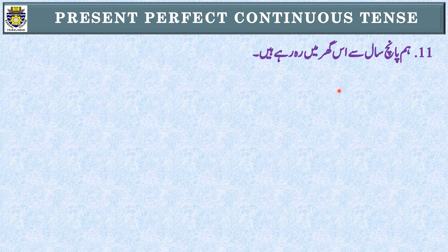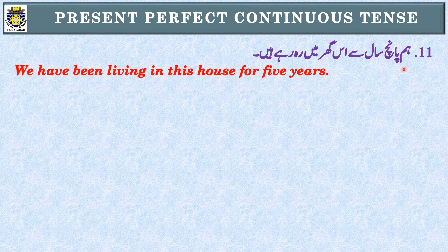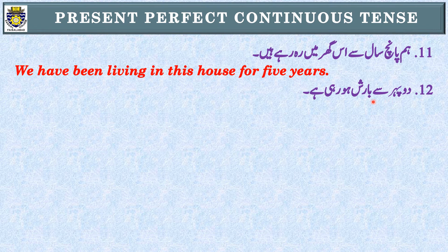Sentence 11: 'ہم پانچ سال سے اس گھر میں رہ رہے ہیں۔' Identification: 'رہے ہیں' اور 'پانچ سال' یعنی duration — Present Perfect Continuous Tense۔ Subject: 'ہم' یعنی we — first person — have been۔ We have been living in this house for five years.